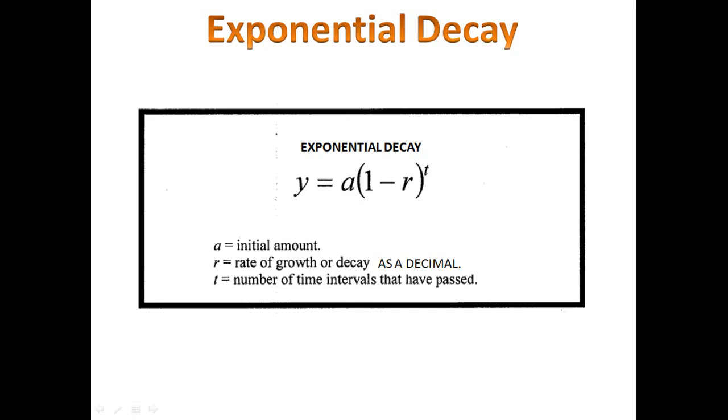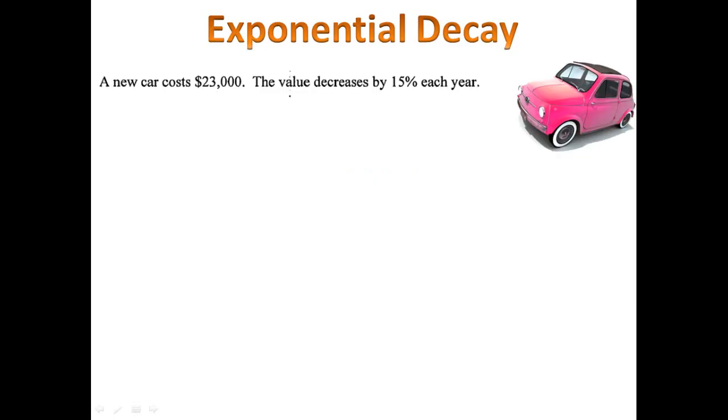Let's take a look at two simple examples today to give you an idea of what this looks like. We have a new car, it costs $23,000. The value of the car decreases by 15% each year. Each year, the car is worth 15% less. We call that depreciation.